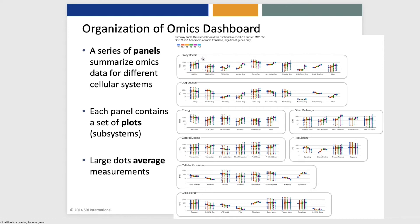The omics dashboard consists of a set of panels for major subsystems, like biosynthesis, degradation, and energy metabolism. And each panel contains a set of plots of the subsystems within that system. Within each plot, the six vertical bars correspond to the six time points.